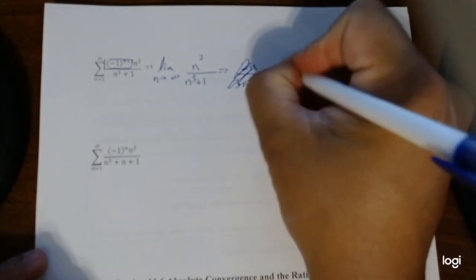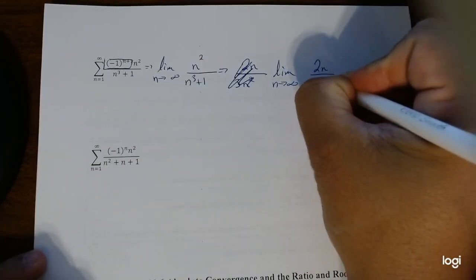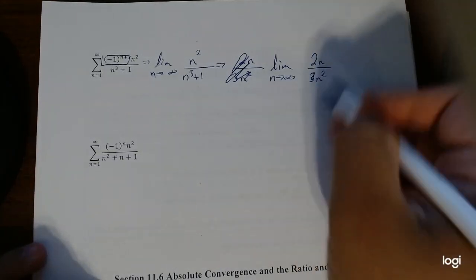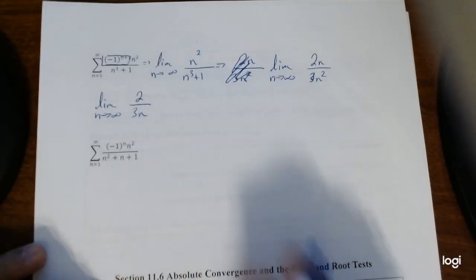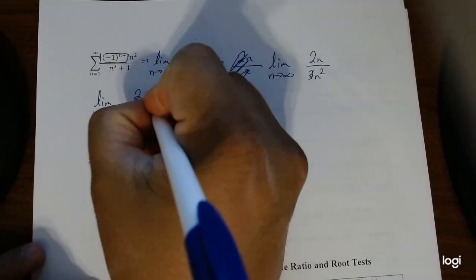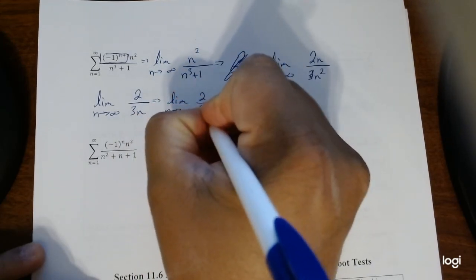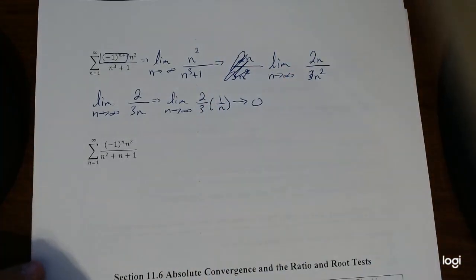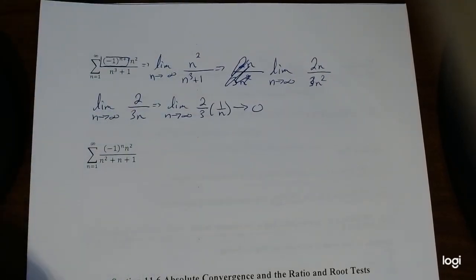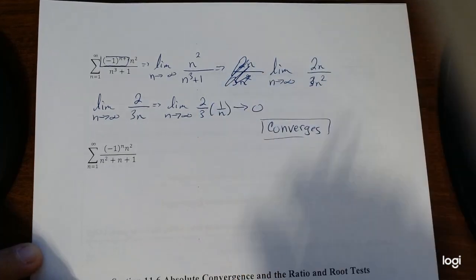So let me write this, the limit as n goes to infinity of 2n over 3n squared. So simplifying that, that just gives you 2 over 3n. And this actually goes to 0, because it's the same property as taking the limit as n goes to infinity of 2 over 3 times 1 over n. Which, 1 over n does go to infinity. I'm sorry, it goes to 0. So the whole process just goes to 0 itself. If you multiply something times 0, you pretty much get 0. So this converges. It actually goes to 0 faster because you multiply by 3.